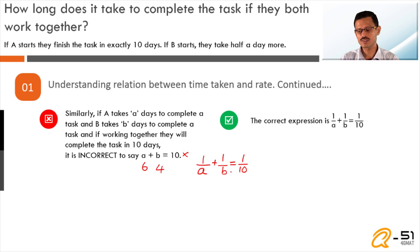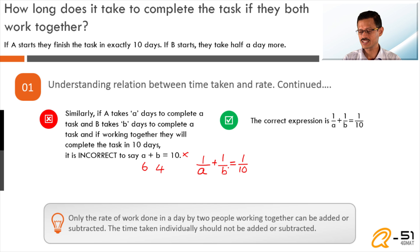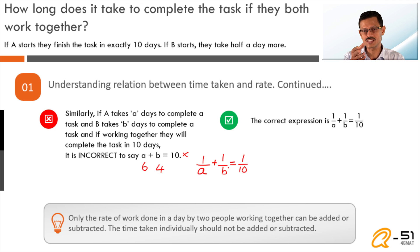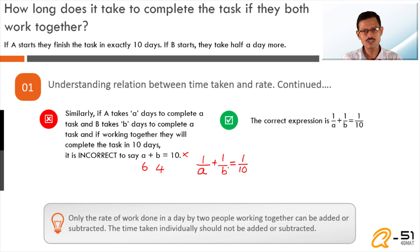Recapping: in all work-time questions, you can only add the rates of work done — you cannot add or subtract the time taken. You always add 1/a and 1/b. You cannot do operations directly on 'a' and 'b' where those represent time taken to complete the task.